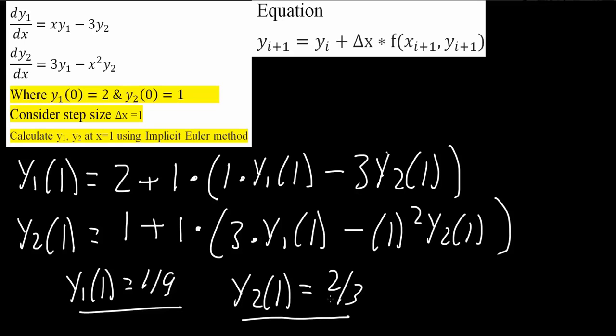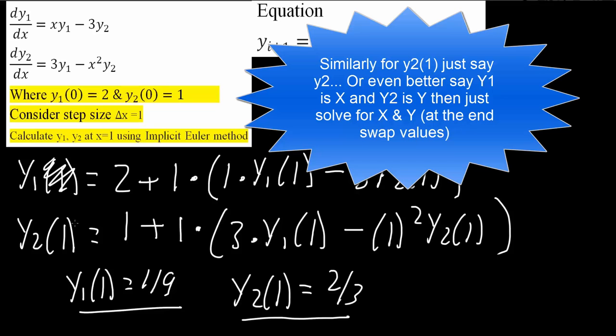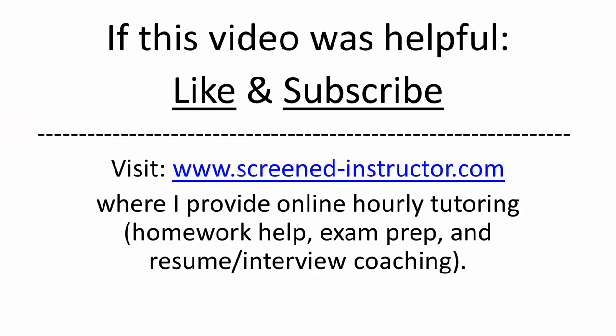I suppose if you were to solve this question purely by hand, one step that you would want to do is instead of saying y1 parenthesis 1, you would just say y1. And this way you're solving two unknown and two variables pretty clearly. And that's all we need to do for this problem. Thank you.